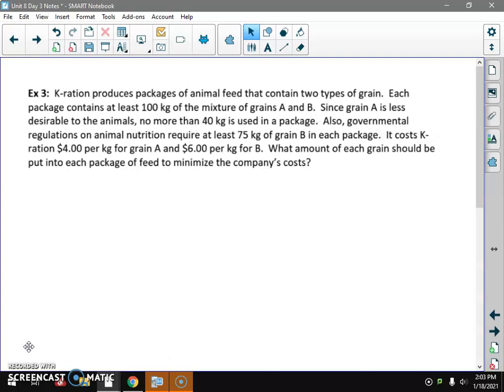K-Eration produces packages of animal feed. It contains two types of grain. Each package contains at least 100 kilograms of the mixture of A and B. Since A is less desirable to animals, we don't want to put any more than 40 kilograms of that. Also, governmental regulations on animal nutrition require at least 75 kilograms of B. It costs K-Eration $4 per kilogram of grain A and $6 per kilogram of grain B. Which amount of each grain should be put into the package of feed to minimize the company's costs?